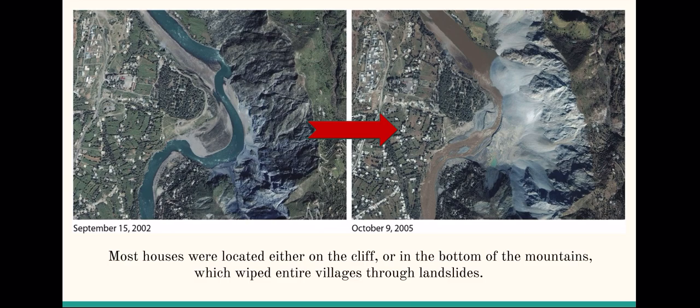The Hazara-Kashmir syntaxis dominates the area and is enclosed by the main boundary thrust. The footwall of the main boundary thrust is composed of the Murree formation.